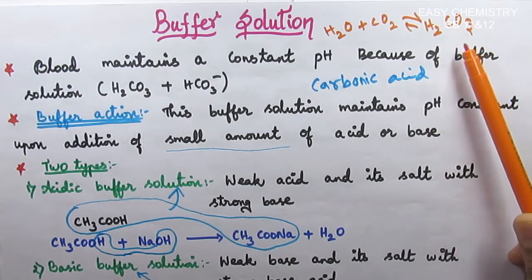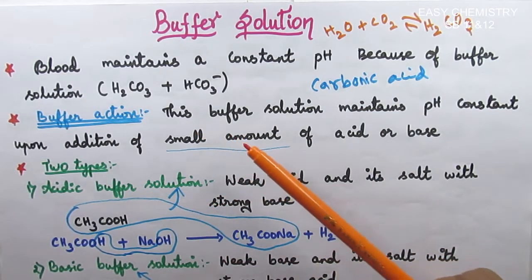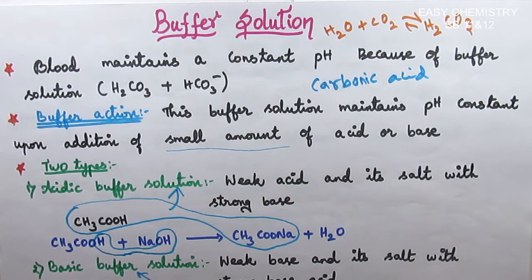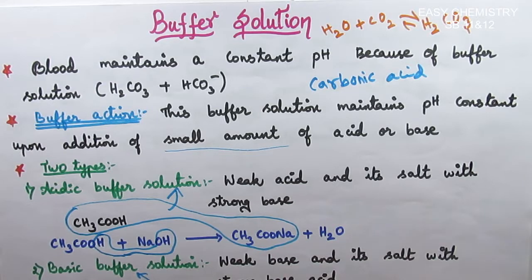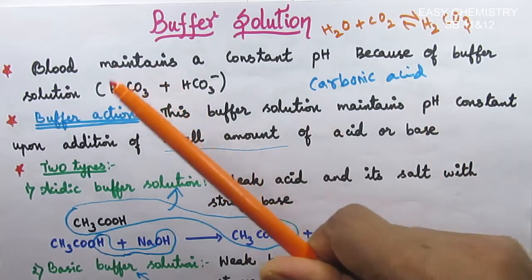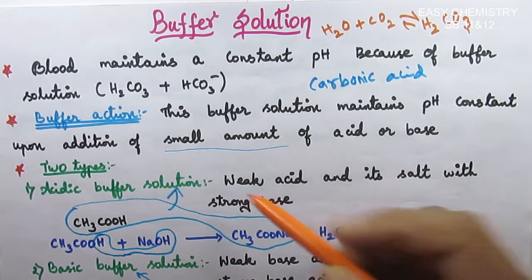HCO3 minus is a weak acid. Buffer action means it maintains pH constant. When we have H plus ions or OH minus ions added, the concentration changes, but pH is maintained. Buffer solution maintains pH constant upon addition of a small amount of acid or base. Even if you add a little bit, pH is maintained.